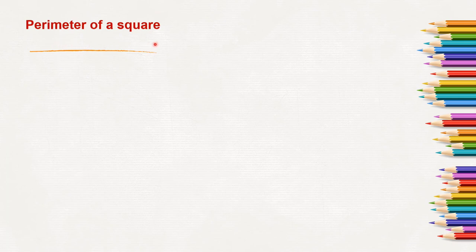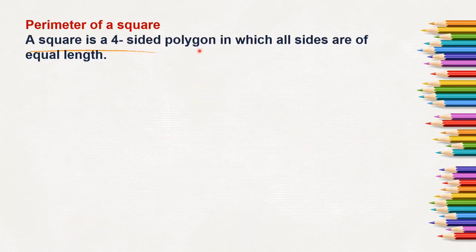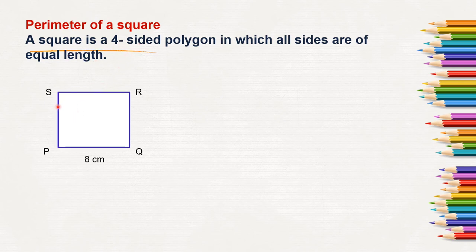Next, let us find out the perimeter of a square. A square is a 4-sided polygon in which all sides are of equal length. In a rectangle, opposite sides are of equal length, but in a square, all the sides are of equal length. Here is a square. If one side is given as 8 cm, we can understand that all sides of the square are 8 cm only.